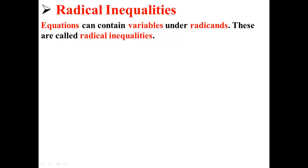Equations can contain variables under radicands. These are called radical inequalities. Here we have an example of a radical inequality: √(x+3) - 2 ≤ 9. Let's try to solve this radical inequality.